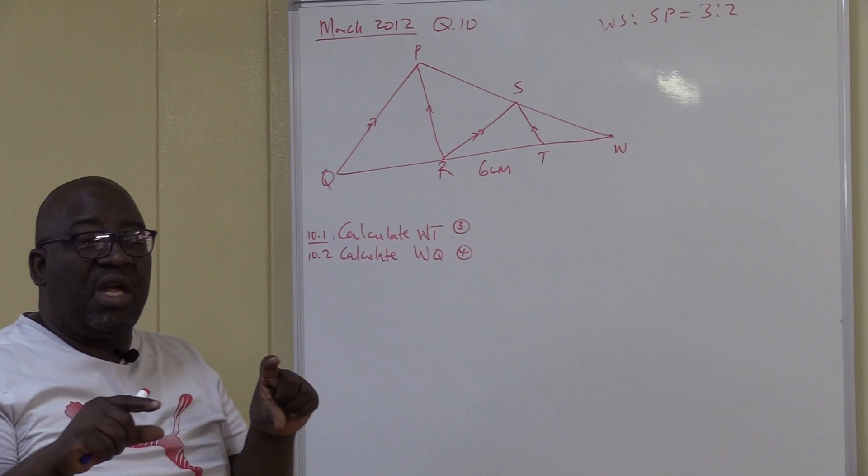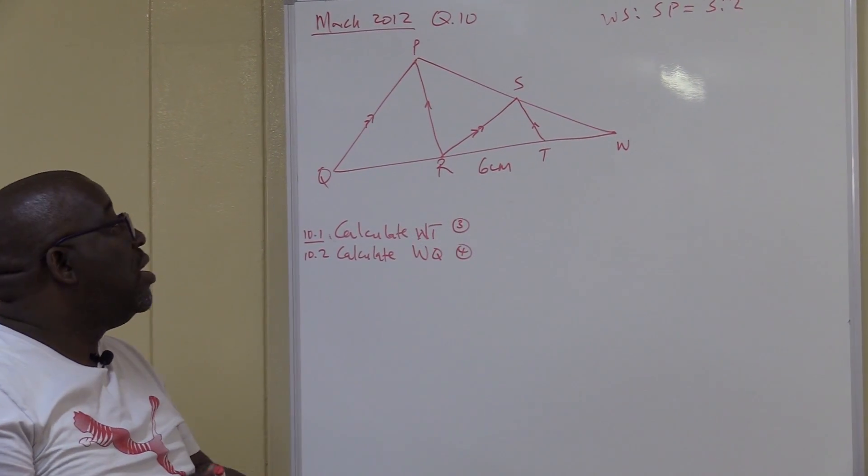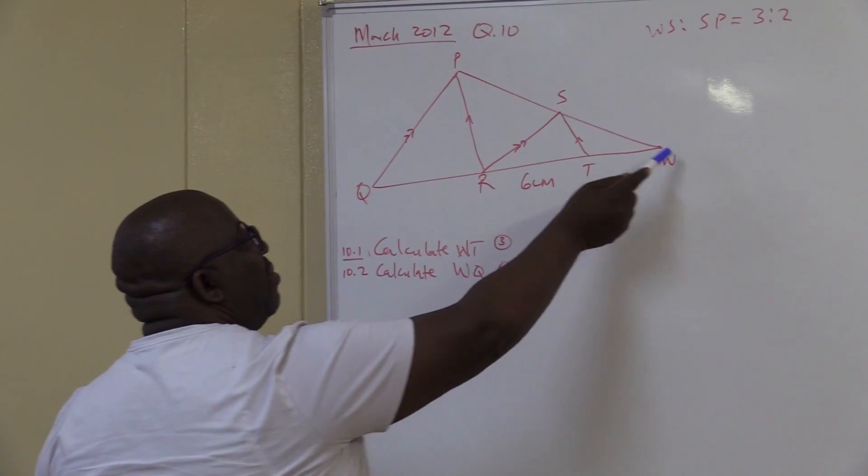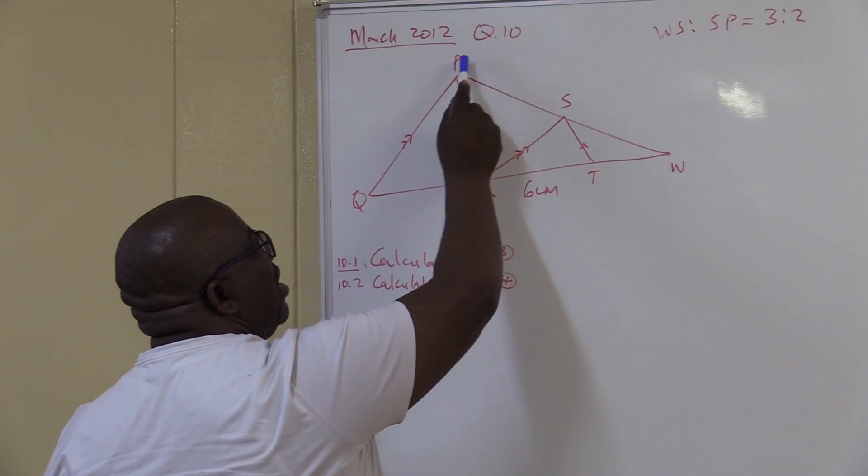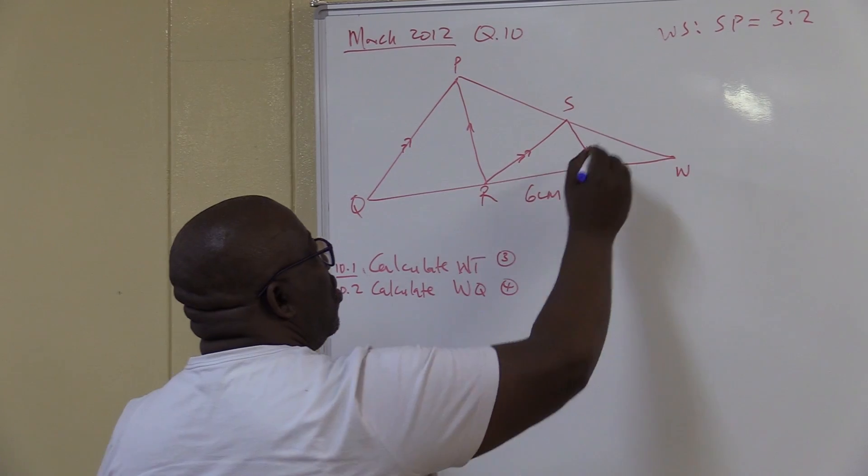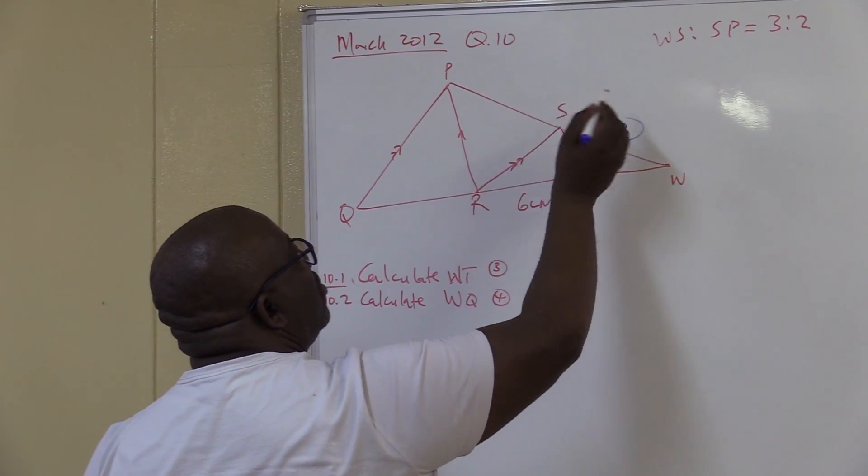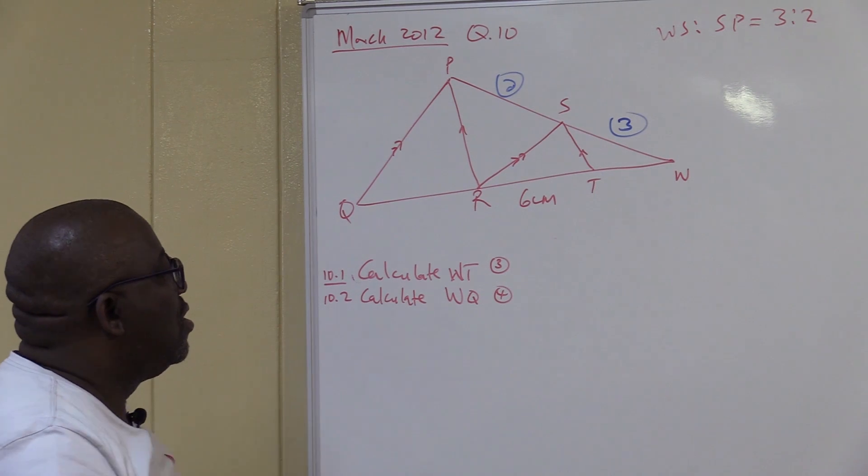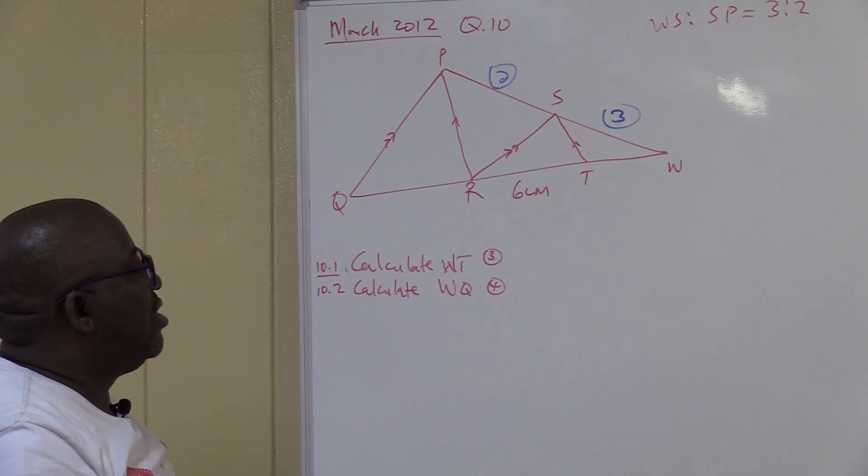Make sure that you read the statement and label your diagram. In this particular case, we are told that WS is to SP, 3 is to 2. Make sure that you put it correct, not the other way around. We're also given RT is 6 centimeters.